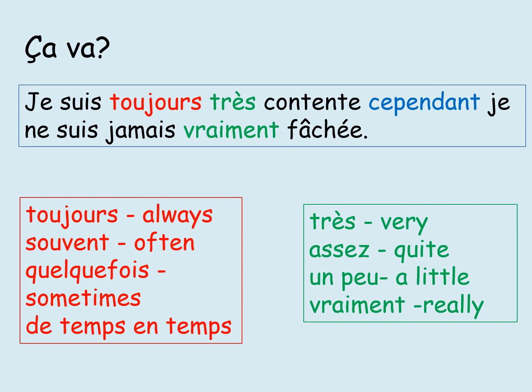Let's have a look at what the sentence now means: je suis toujours très contente, cependant, je ne suis jamais vraiment fâché. I am always very happy. However, I am never really angry. On your pieces of paper, can you now write a lovely extended sentence similar to mine, using mine as a model but with your own new words? Ça va?